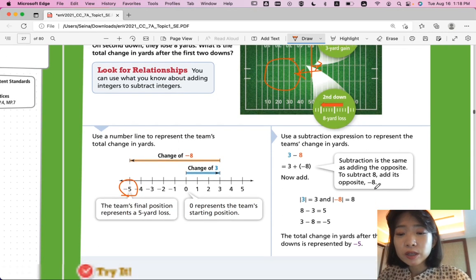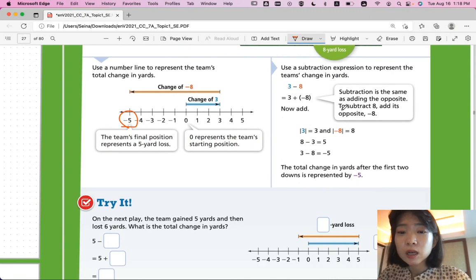And you can also use subtraction expression to represent the team's change in yards. So 3 minus 8 could also be written as addition, 3 plus negative 8. And we already learned that if we're adding two integers that has different signs, then we subtract the absolute value of them, whichever is greater. And we keep the sign of the absolute value, whichever absolute value is greater. So 8 minus 3 is 5, and 8 is greater than 3. So we're going to keep the negative sign from negative 8. So we have negative 5.